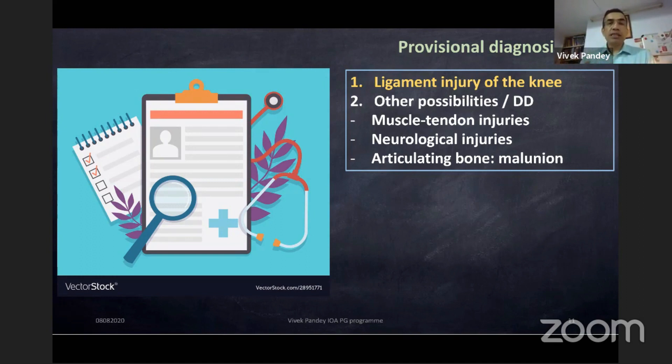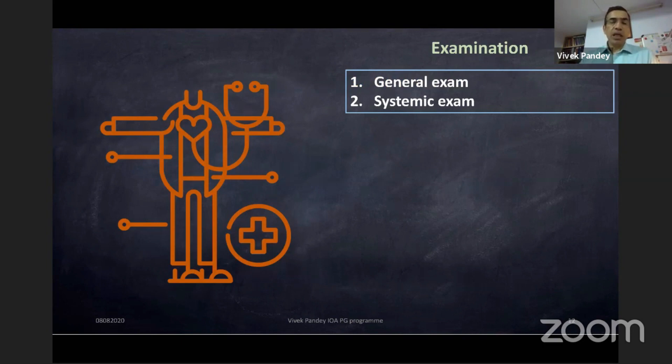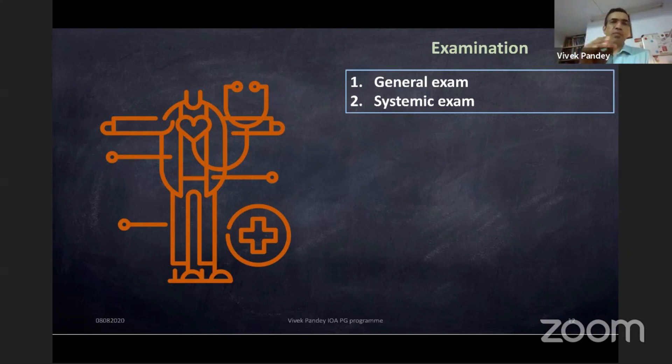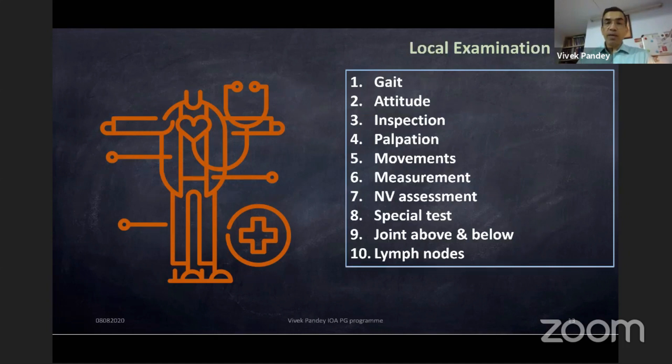Coming to examination: in whatever case you are examining, it is important to mention at least one line that general and systemic examination is normal. Current students have a habit of saying they haven't done it — that's wrong. It only takes one minute. Local examination should go in serial order, because we miss only once and the day we miss it, it's a disaster.